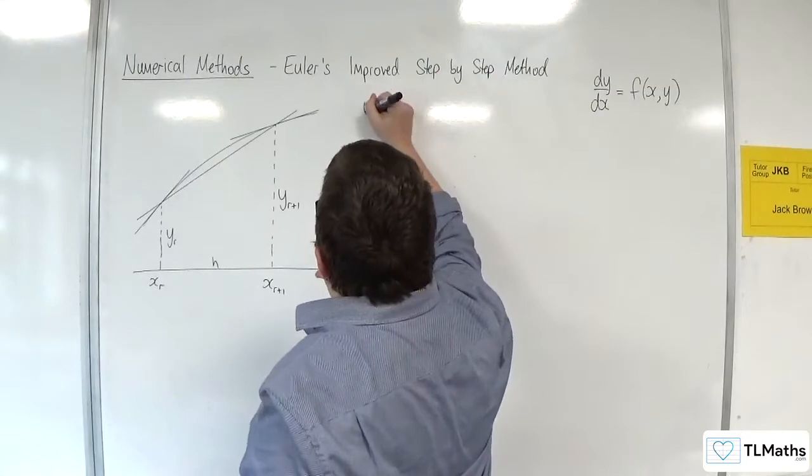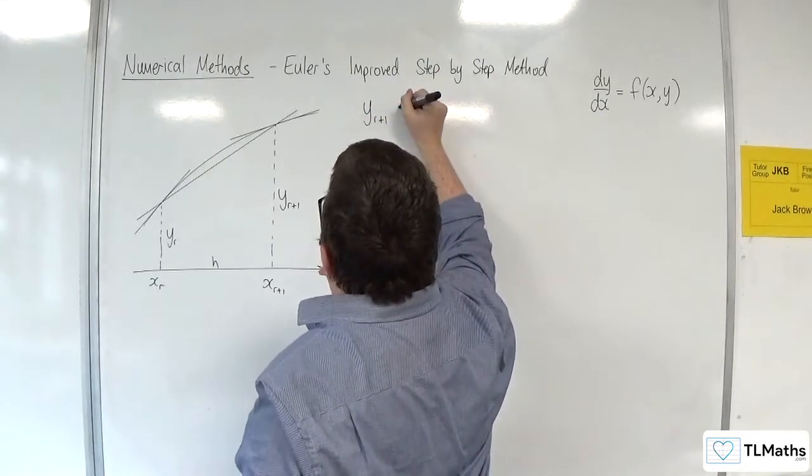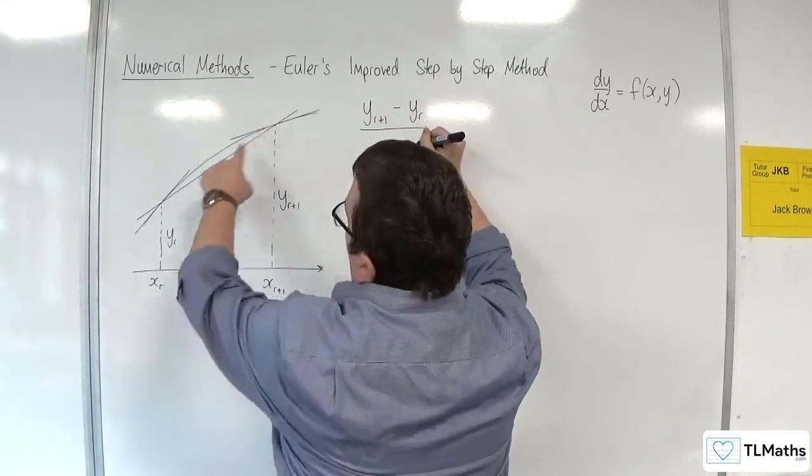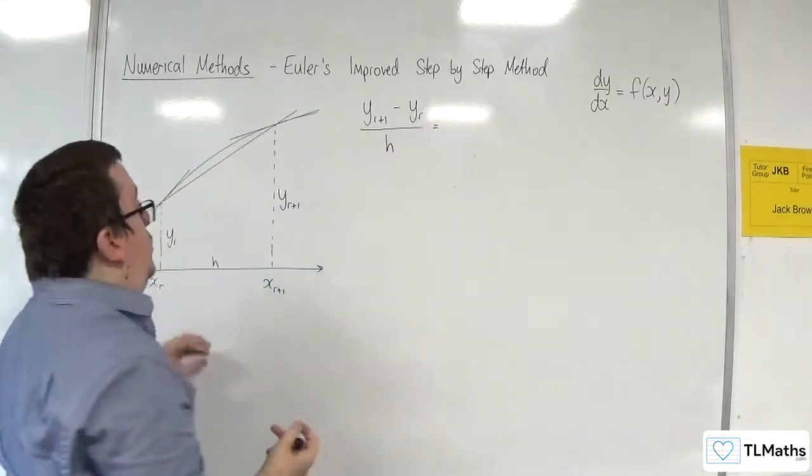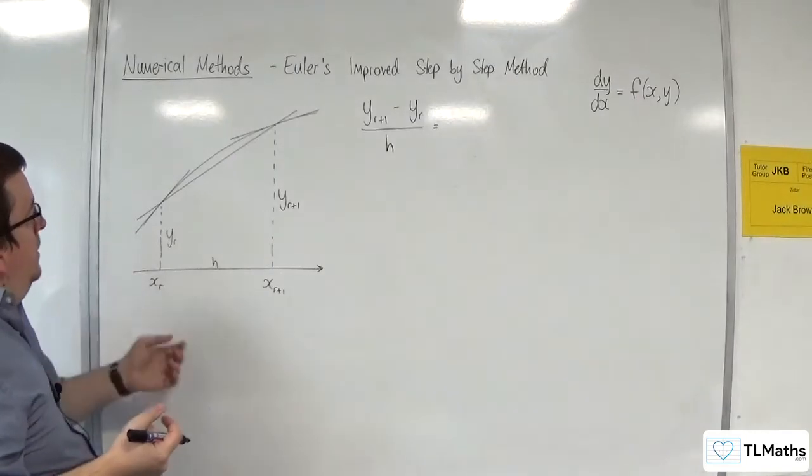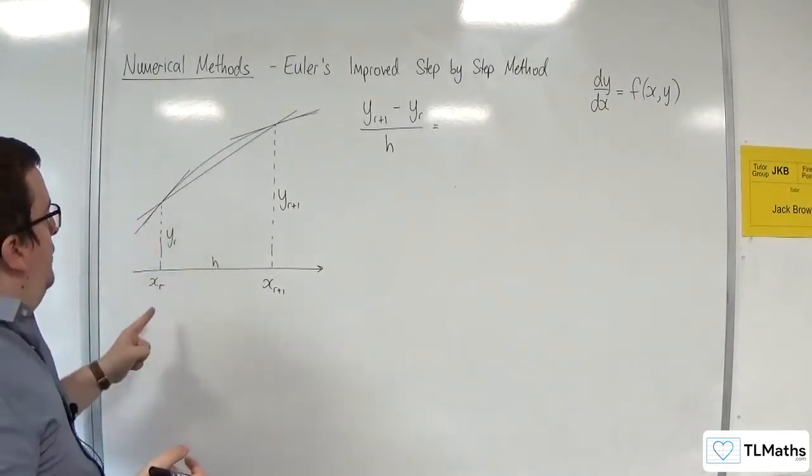So, I would be saying that YR plus 1, take away YR, the difference in the Y coordinates, divided by the difference in the X coordinates, which is H, would be equal to the average of the gradients of those two points.